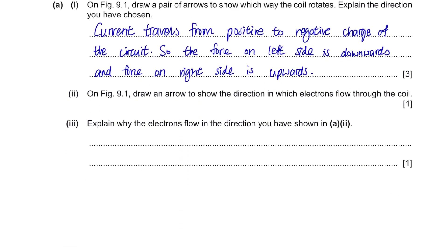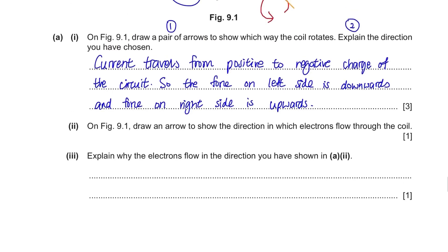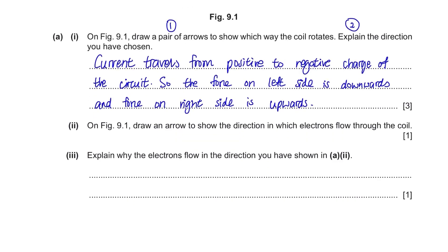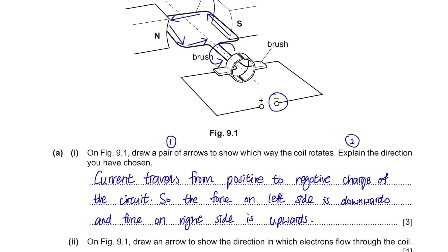On Figure 9.1, draw an arrow to show the direction in which electrons flow through the coil. Current flows from positive to negative, but electrons travel in the opposite direction of the current. So they will travel from the negative to the positive side of the coil. Electrons flow in the opposite direction of current because electrons are negative and they are repelled from the negative connection of the supply, so they move away from it.